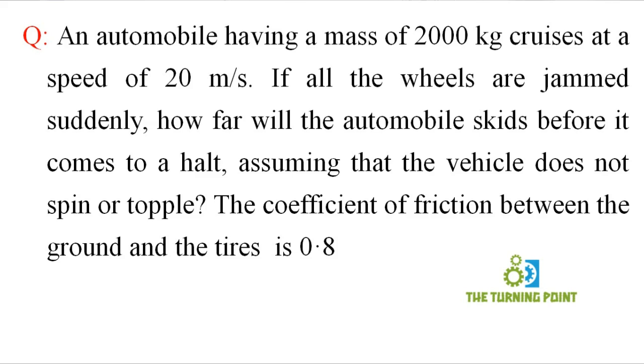The coefficient of friction between the ground and tires is 0.8. So here, the mass of the vehicle is given as 2000 kg and the initial speed is given as 20 meters per second. It is mentioned that wheels are jammed suddenly, so when the wheels are jammed suddenly, it has been brought to the state of rest. At that moment, the final velocity is equal to 0. It is asked to calculate how far will the automobile skid—that means calculate the distance. Assuming the vehicle doesn't spin or topple, and the coefficient of friction is given as 0.8, from that we can find the acceleration first, later we will find the distance.